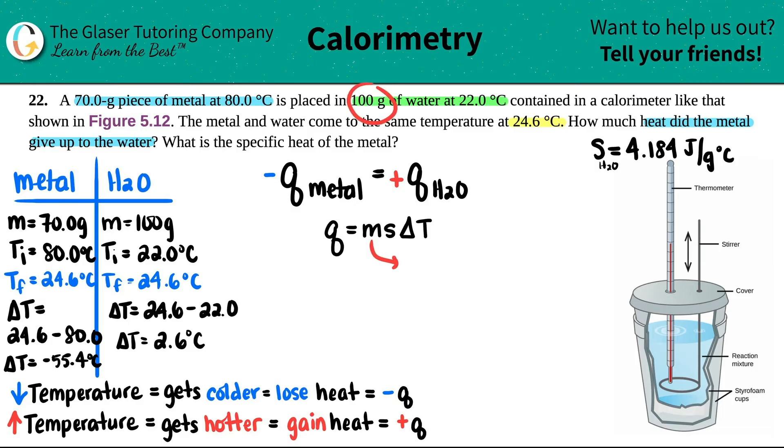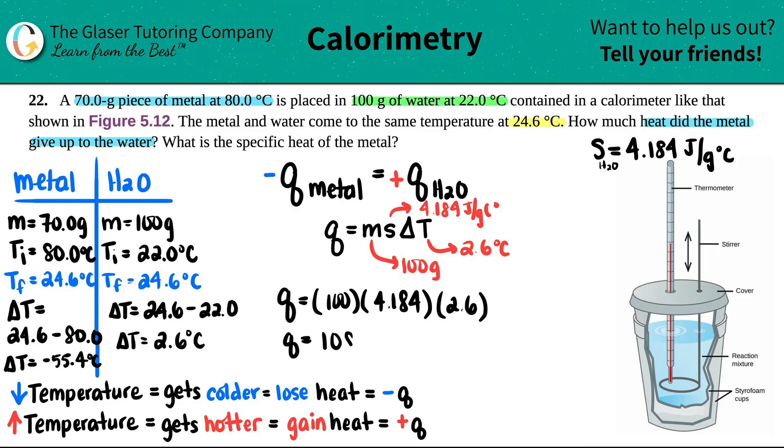The mass of the water, they told me it was 100 grams, so I got that going. We just said that we knew the s, 4.184. And then the delta T, which is what we just found out for the water, was 2.6. Okay, so let's see. Q equals 100 times 4.184 times 2.6. So 100 times 4.184 times 2.6, I get roughly 1087, actually 1088, we'll round it up. 1088 joules.